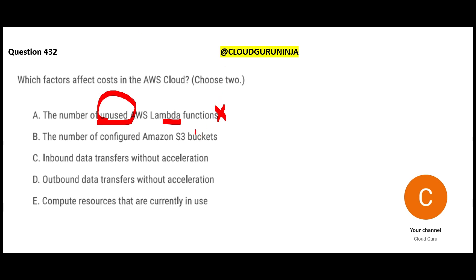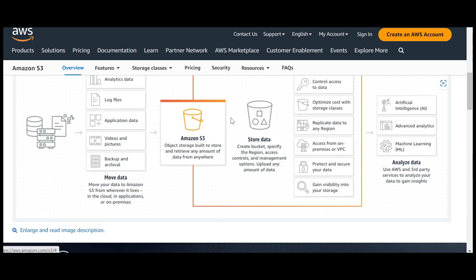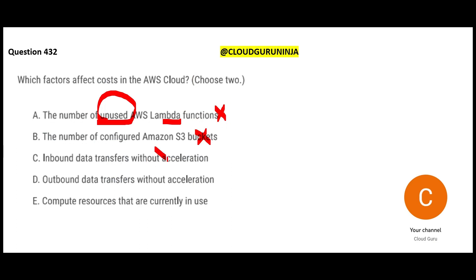Option B mentions the number of S3 buckets - this is wrong because buckets do not matter, storage does. If you have gigabytes of data inside a bucket you will be charged, but creating hundreds of buckets has no detrimental effect on costs. Option C says inbound data transfers without acceleration - this is wrong because inbound data transfers are free. AWS wants your data coming in and cannot charge you for incoming data. They charge you for outgoing data.